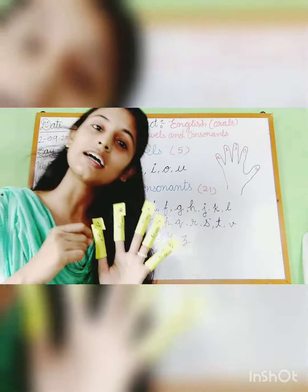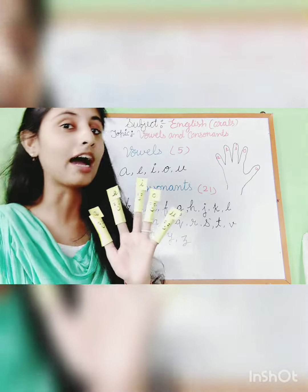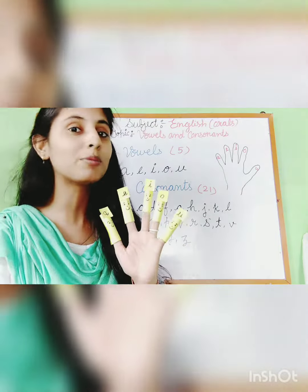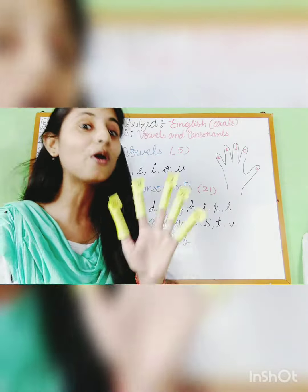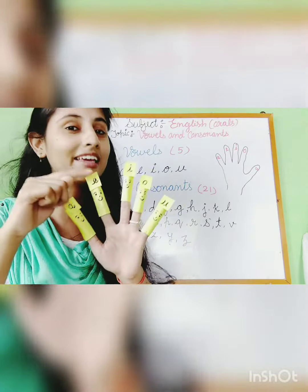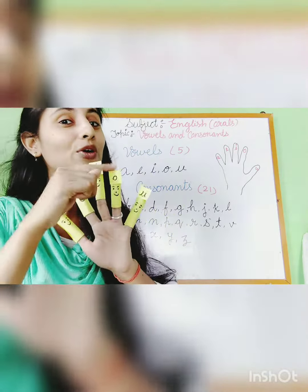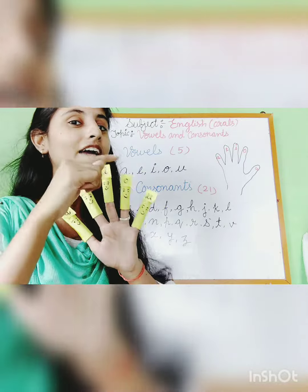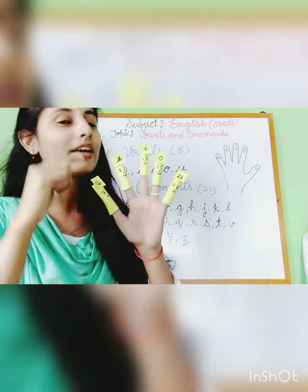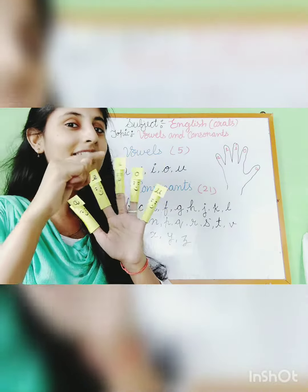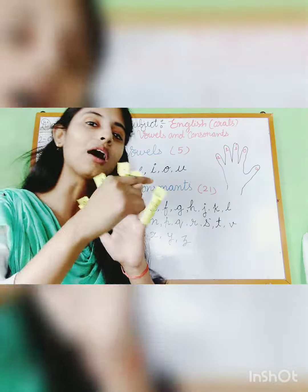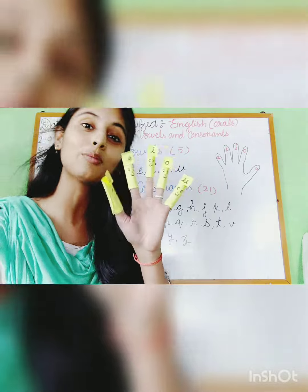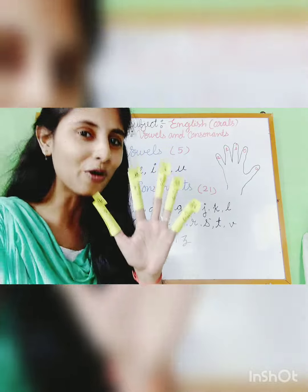Vowels of the alphabet, I know them all by name. A, E, I, O, U. A, E, I, O, U. A, E, I, O, U. I know them all by name.